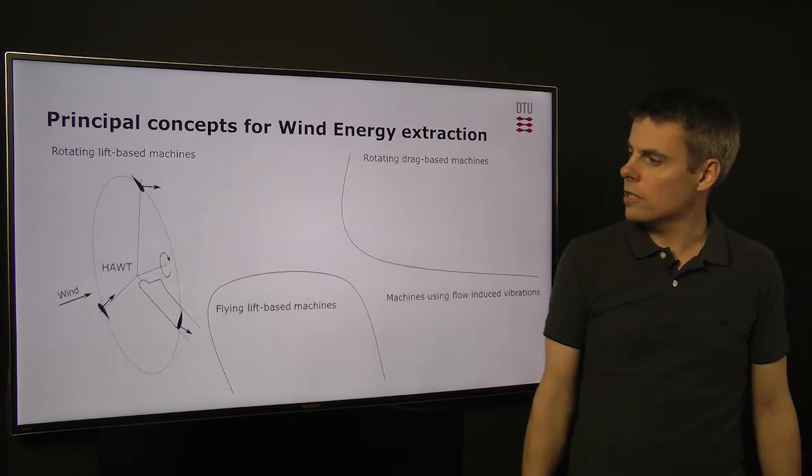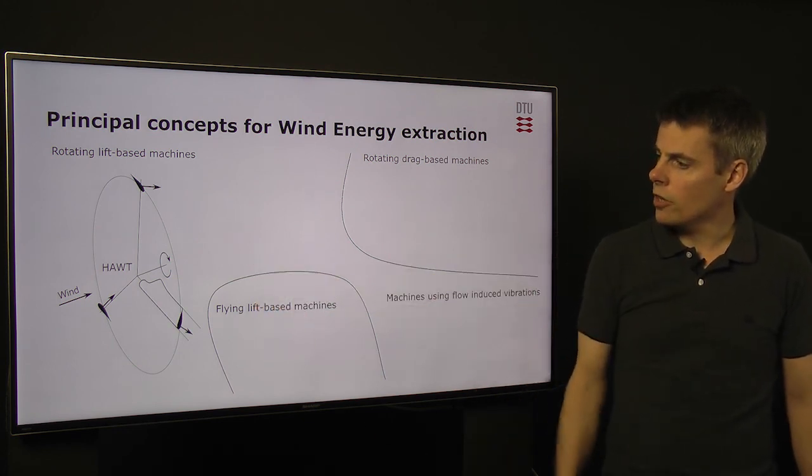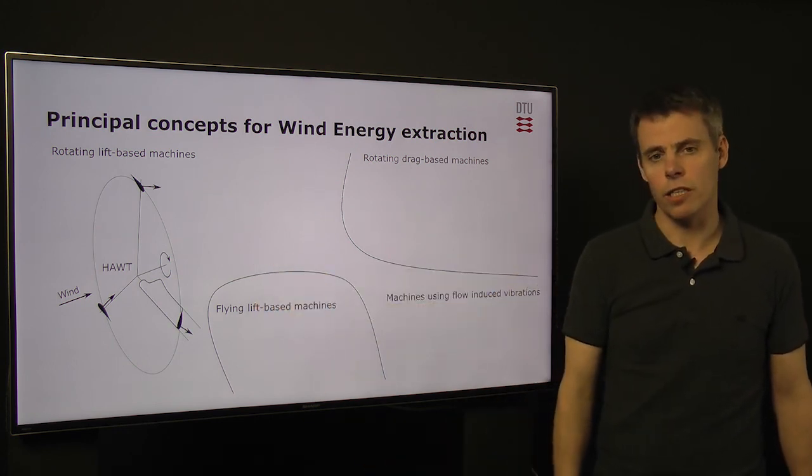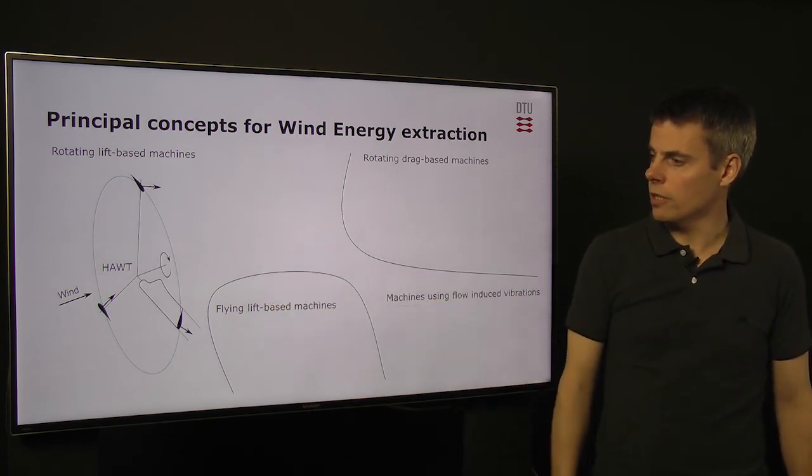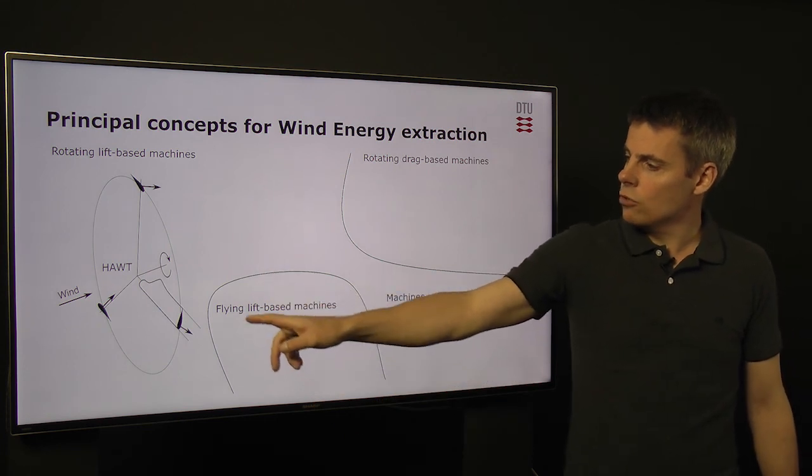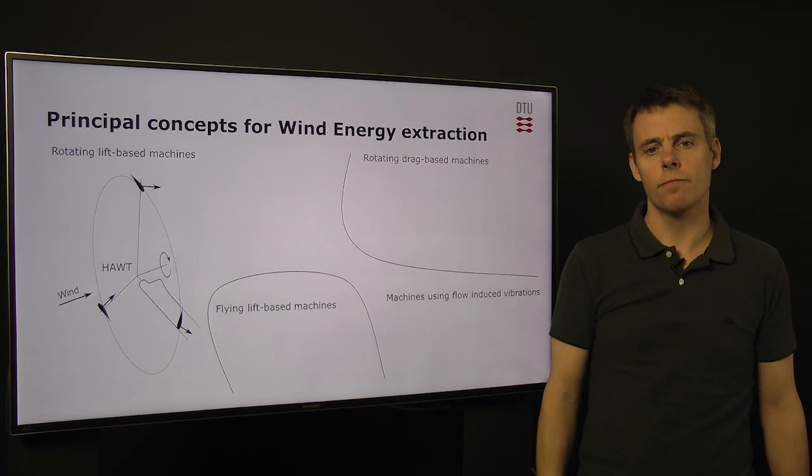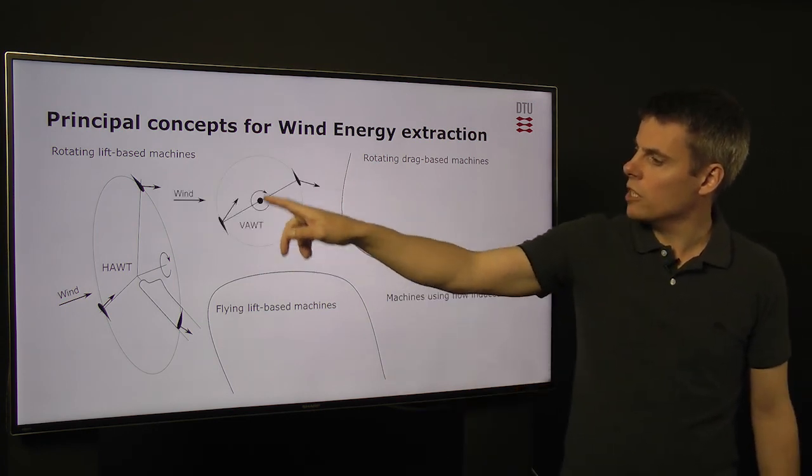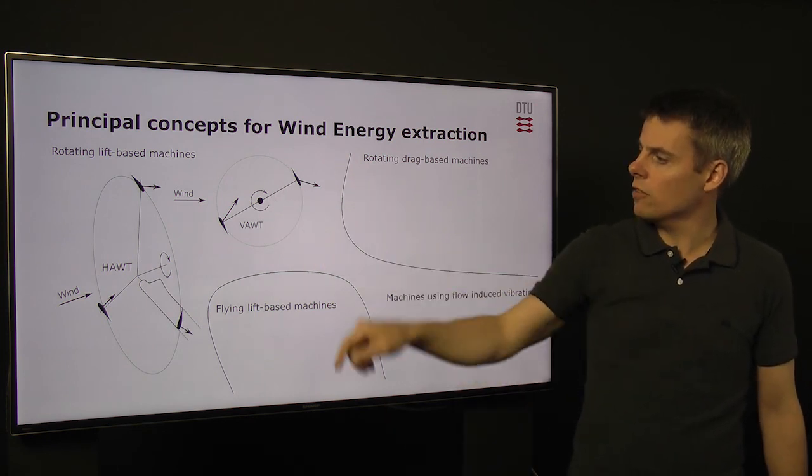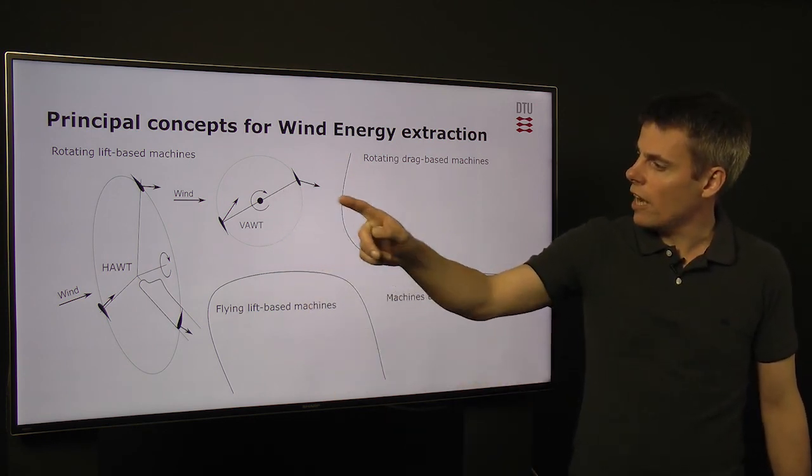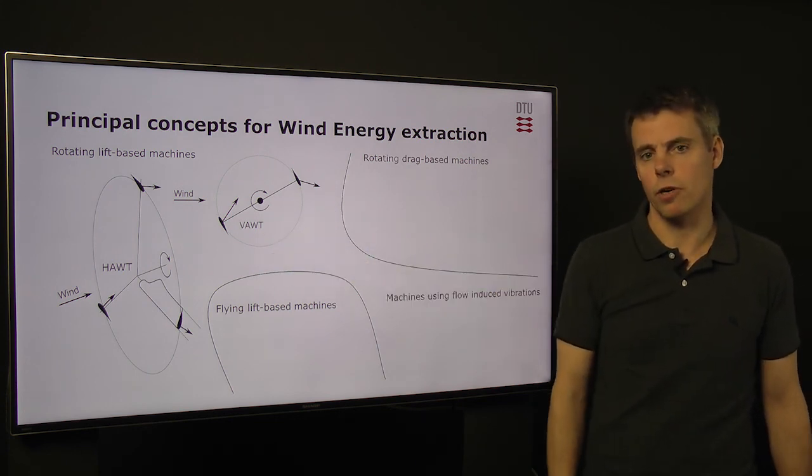The most well-known is the horizontal axis wind turbine, where the energy from the wind is extracted from a rotating shaft that is parallel to the wind. It's rotating due to the lift forces on the airfoils of its blades. Another concept, the blades rotate in a horizontal plane and also driven by lift where the shaft is now vertical. Therefore, it's called vertical axis wind turbine.